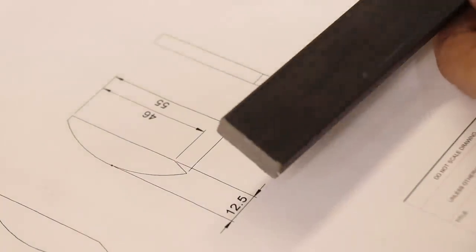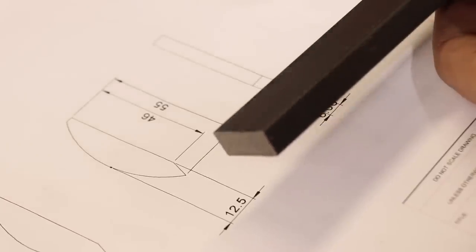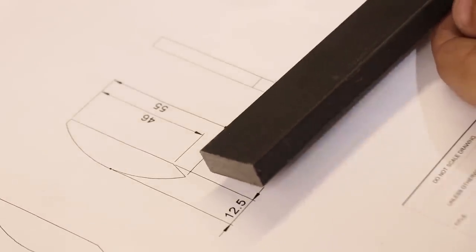Next I'll make the swing arms. The stock I'll be using is a little bit oversized, so I'll have to machine it down.